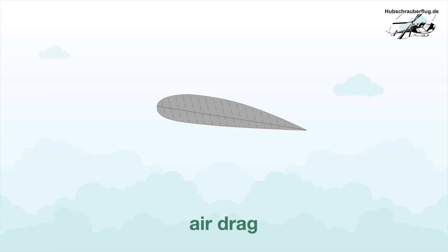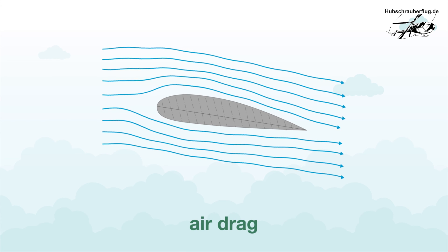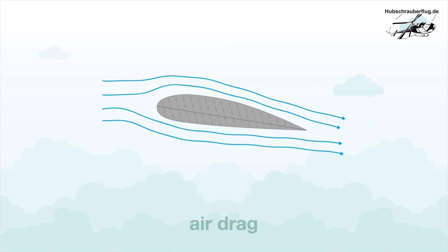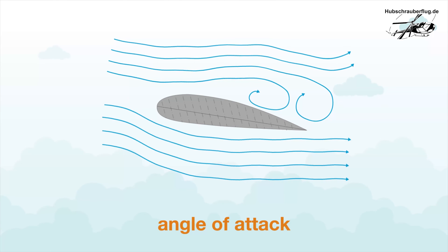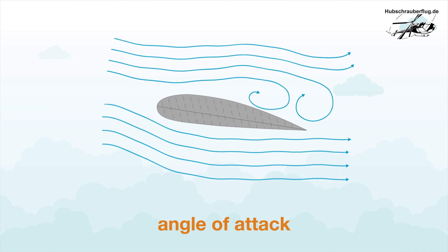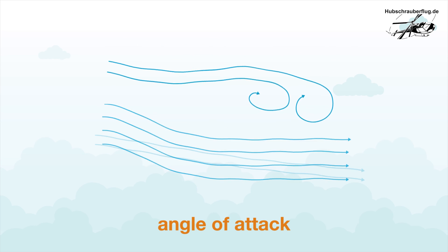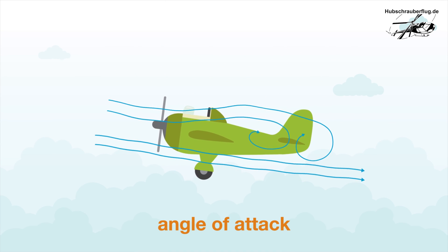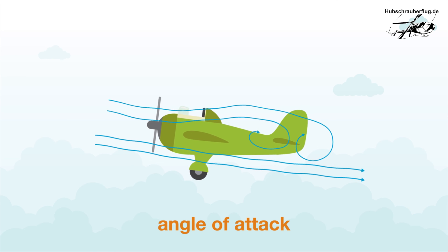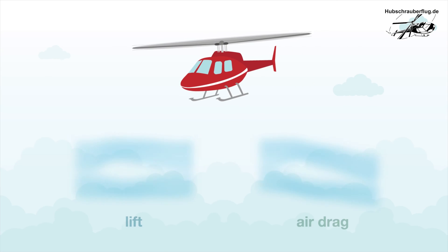For an aircraft to actually fly, the blade in the airflow must be slightly inclined, which deflects the air downwards. There is now positive pressure on the underside of the blade, and this increases total lift. The negative pressure on the upper blade surface also increases, as the air has to travel further through greater curvature and is thereby accelerated more intensively. The larger angle of attack also increases air drag, which must be compensated for by more operating power.